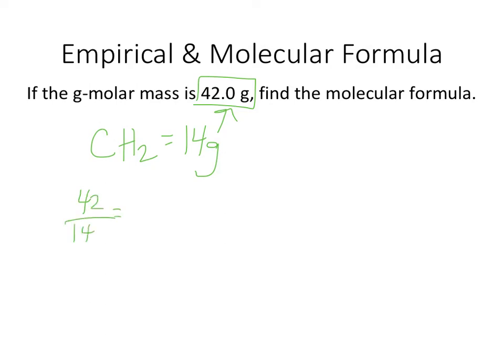But if the entire formula is supposed to have a mass of 42 grams, how many 14s go into 42? If you do 42 divided by 14, you end up with 3, which means I'm going to have to multiply it by 3. So that would be 3 carbons instead of 1, and 6 hydrogens instead of 2. That's my molecular formula.